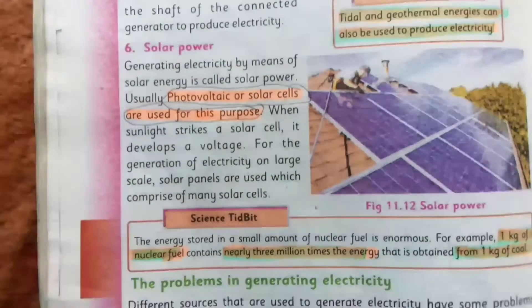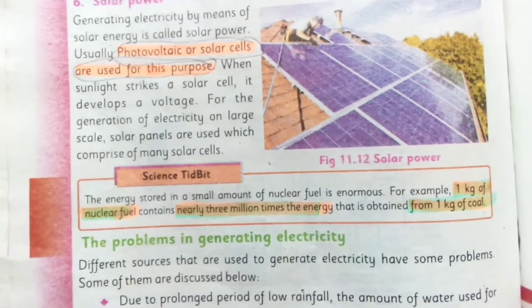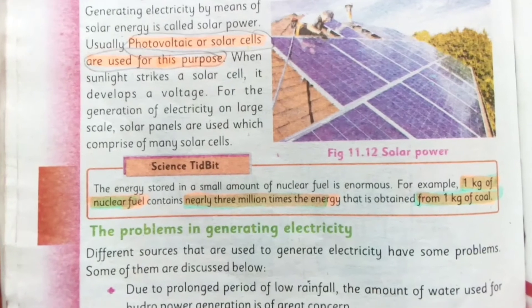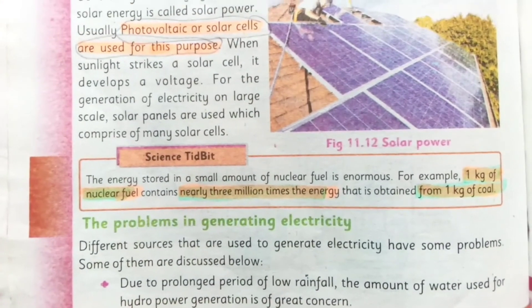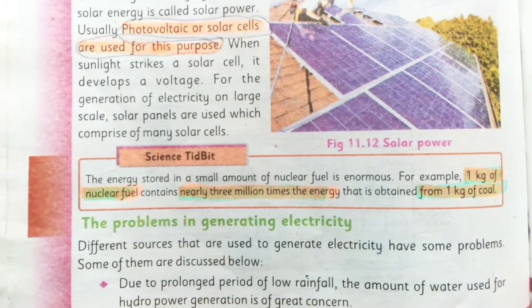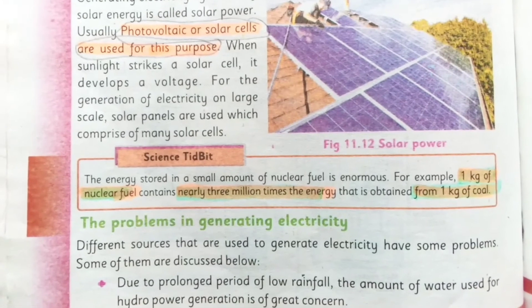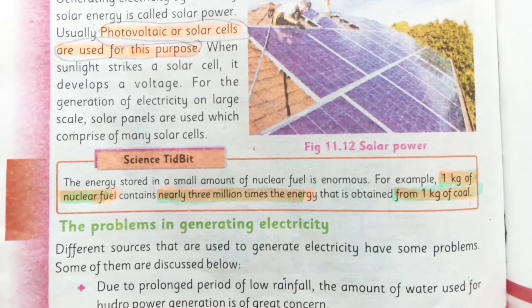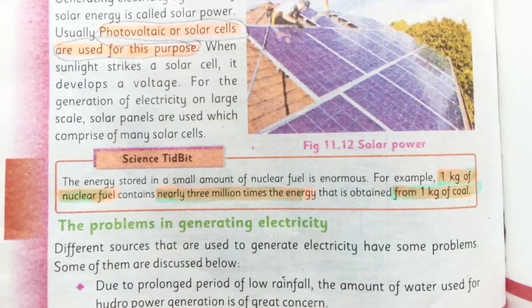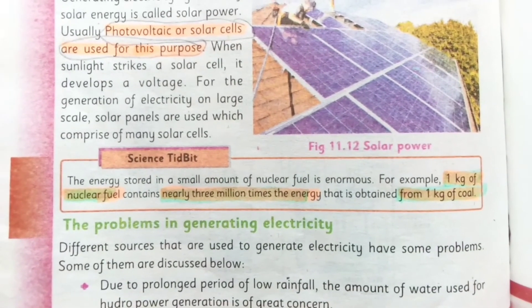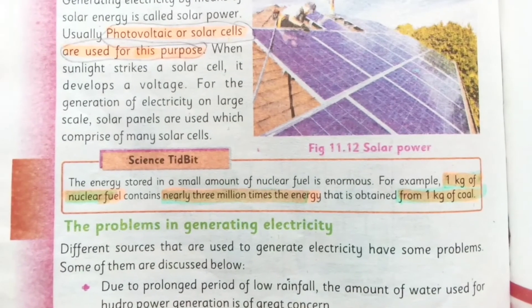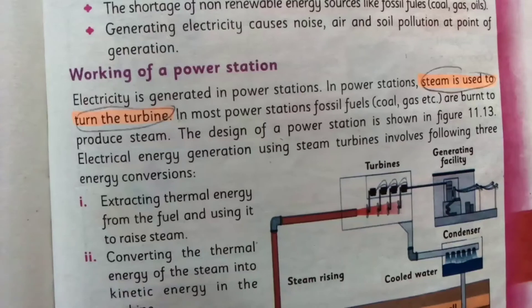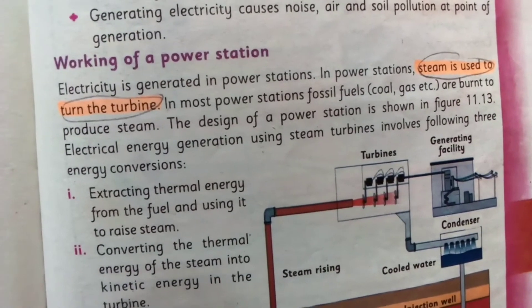The energy stored in a small amount of nuclear fuel is enormous. For example, one kilogram of nuclear fuel contains nearly three million times the energy obtained from one kilogram of coal. Steam is used to turn the turbine in a nuclear power plant.